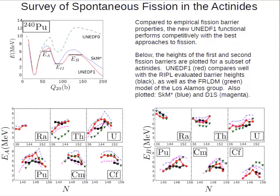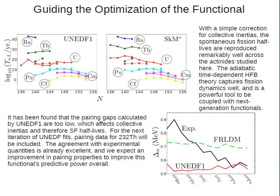I show the first barrier heights in this graph where the black squares are empirical points from the RIPL evaluation, and the second barrier heights are in the right-hand graph with red circles for UNIDF1 values. In general, UNIDF1 does very well, especially for the second barriers — it has a somewhat lower RMS value for second barrier heights across the actinides studied. I need to emphasize that fission barriers themselves are not directly observable; you can't just see the fission barrier height — it must be inferred from fission probability data, making it a secondary and very model-dependent observable.